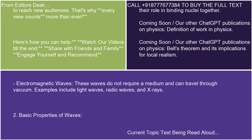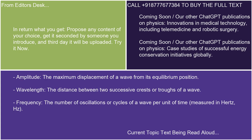2. Basic properties of waves. Amplitude: the maximum displacement of a wave from its equilibrium position. Wavelength: the distance between two successive crests or troughs of a wave. Frequency: the number of oscillations or cycles of a wave per unit of time, measured in hertz.